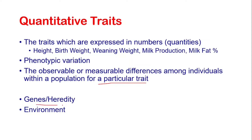The first major factor is genes or heredity, and the second is environment. So quantitative traits are influenced by both genes and environment. Both of these factors collectively cause the variation in quantitative traits. We will discuss both of these factors in detail in the next slides.